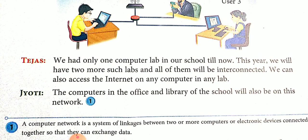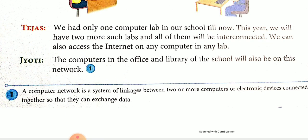The computers in the office and library of the school will also be on this network. A computer network is a system of linkage between two or more computers or electronic devices connected together so that they can exchange data. Network is the interconnection of different computers, or we can say Network is a group of computers connected with each other.